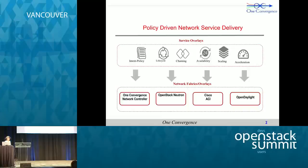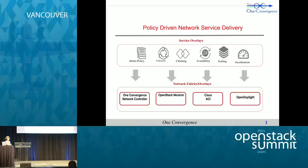OneConvergence's policy-driven network service delivery framework essentially enables the deployment of network services in a virtual environment. The key feature set includes lifecycle management and configuration of network services, traffic steering to a set of chained and inserted services, and high availability and scaling of these network services. The entire solution is driven through a policy-driven framework and works with a variety of network fabrics and network controllers, including OneConvergence's own network controller, which uses a tunneling-based network virtualization solution. We also support vanilla OpenStack Neutron and Cisco's APIC-controlled ACI fabric.